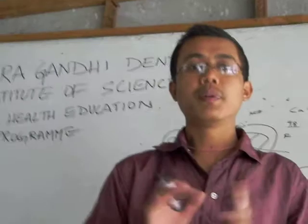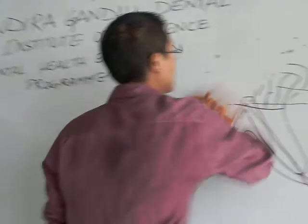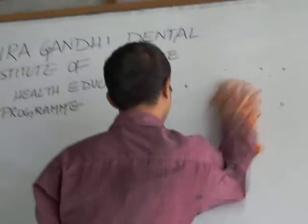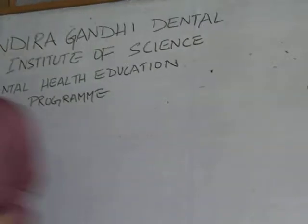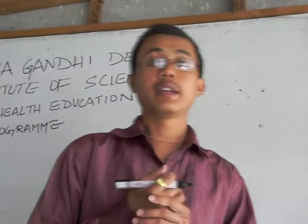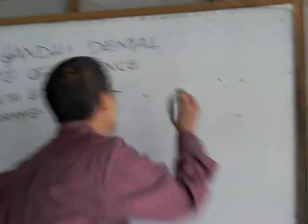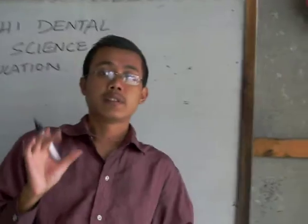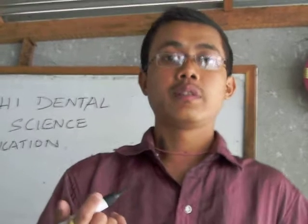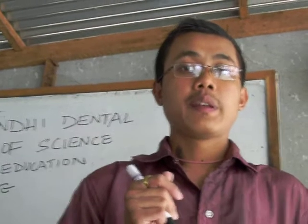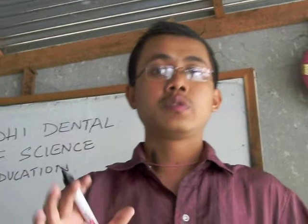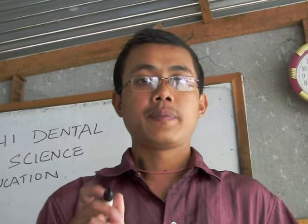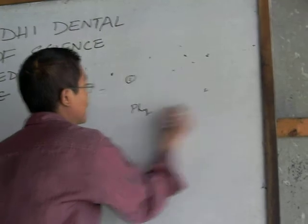Today I am mainly going to concentrate on how to prevent dental caries — specifically the physical and chemical methods. First, limit sticky carbohydrates such as lollies and other sweets. Then, brush twice daily. Also, use a low-sugar diet. There are two types of prevention: the physical method and the chemical method.